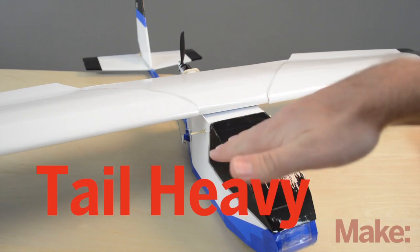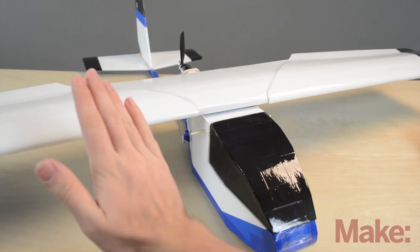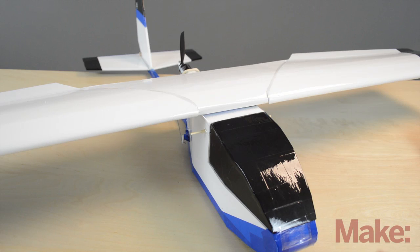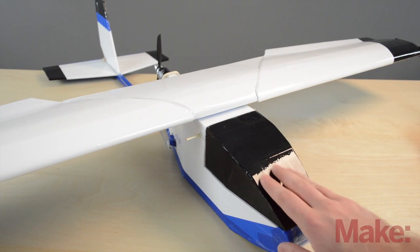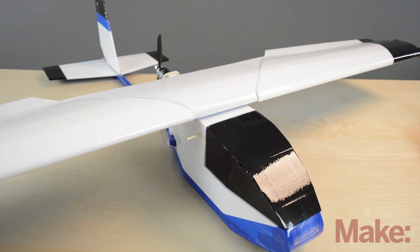With a nose heavy plane, you always have to be pushing down and it's just going to be flying backwards. So that's it for CG and that's pretty much it for the setup and you're ready to fly.